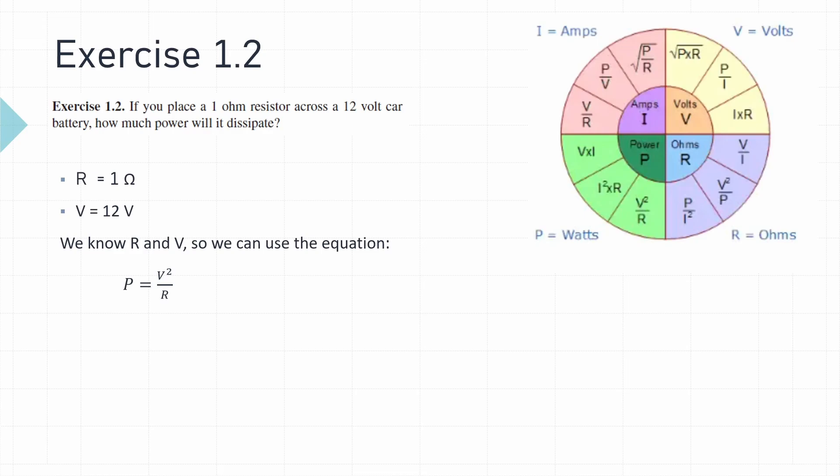So that gives us a power dissipation across a one ohm resistor with a 12 volt power supply of 144 watts, which is obviously very high and would probably melt instantly.